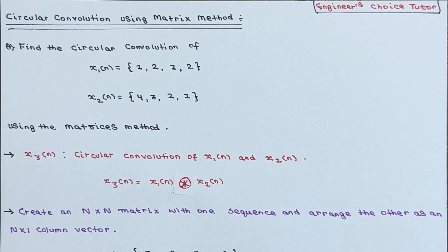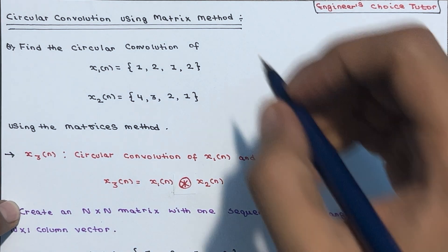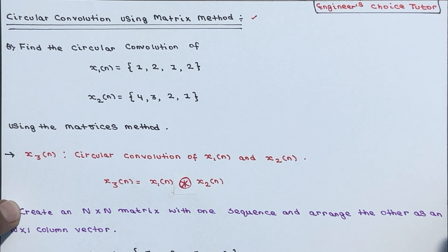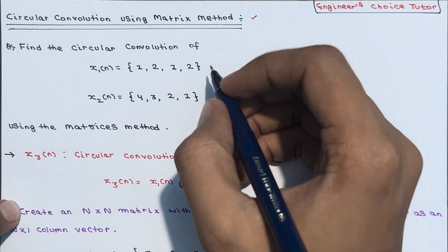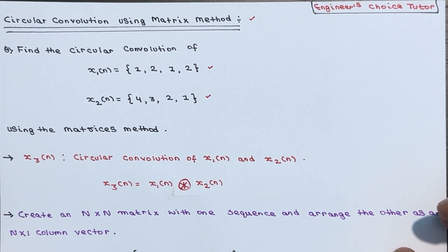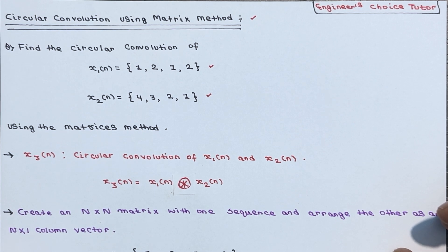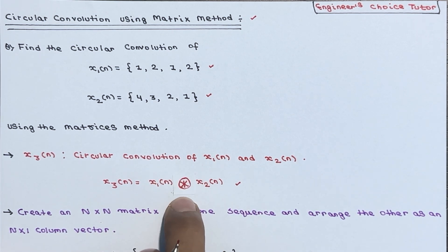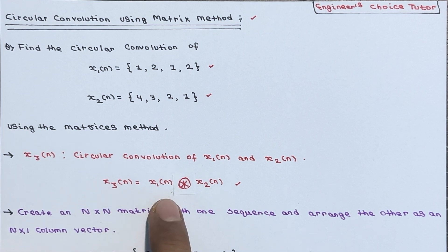Hi everyone, in this lecture we will talk about circular convolution using the matrix method. We need to find the circular convolution of x1[n] and x2[n], where two sequences are given. Let x3[n] be the circular convolution of x1[n] and x2[n], represented by the circular convolution symbol.